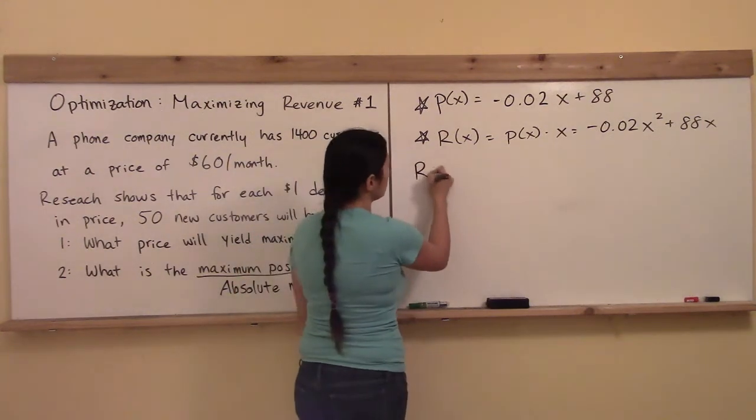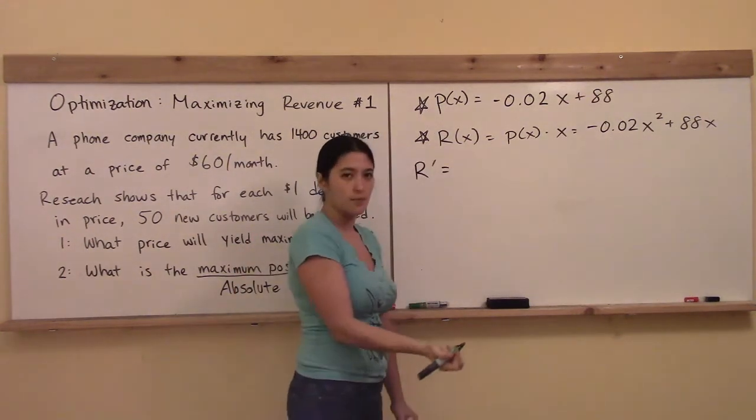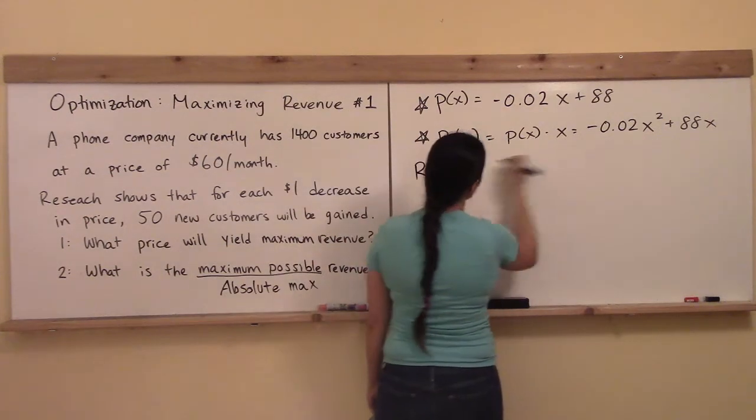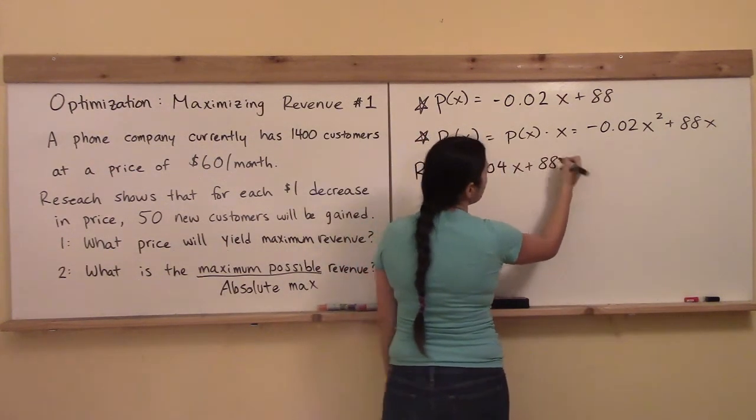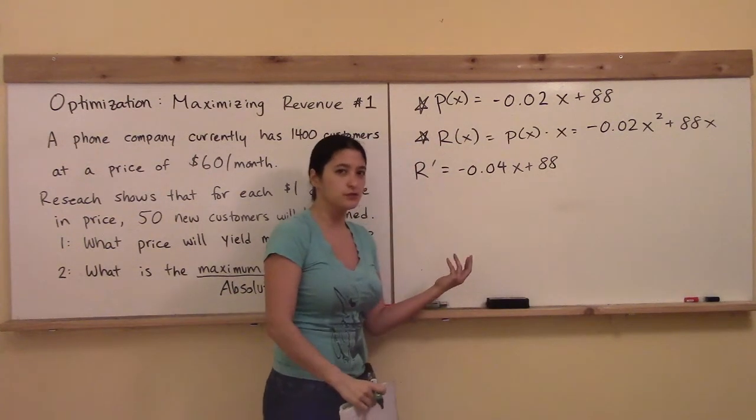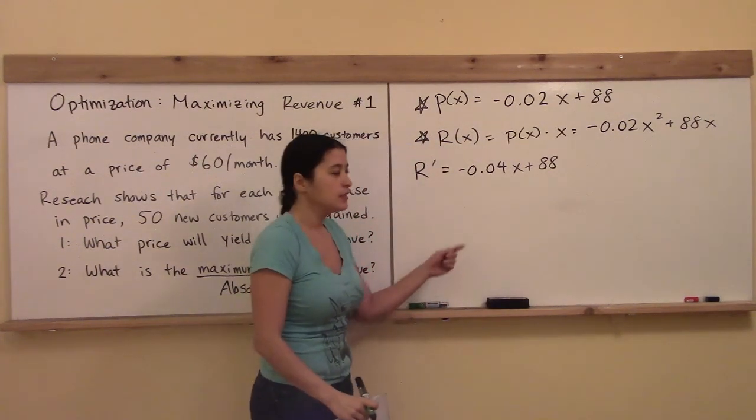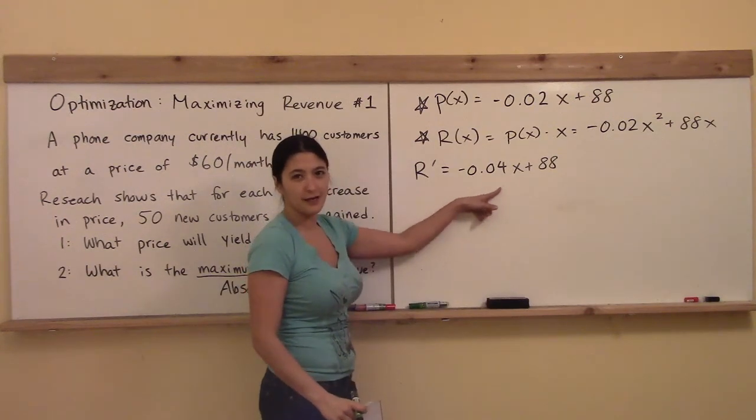Do you know what to do from here to find the relative maximum? That's right. You're going to take the derivative, right? So you take the R prime, so that's equal to negative 0.04x plus 88,